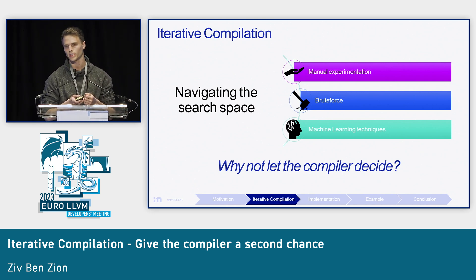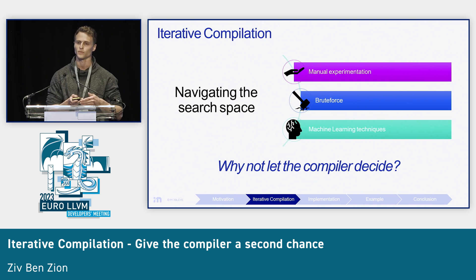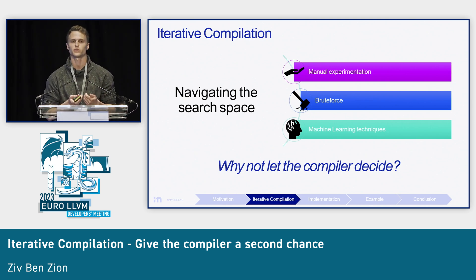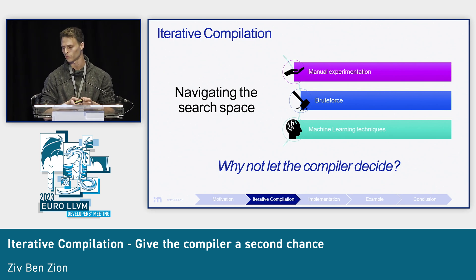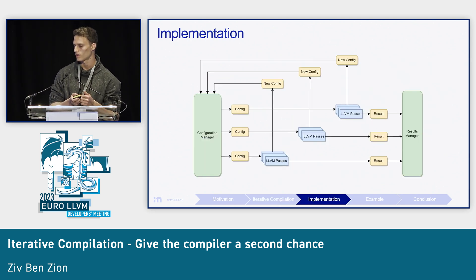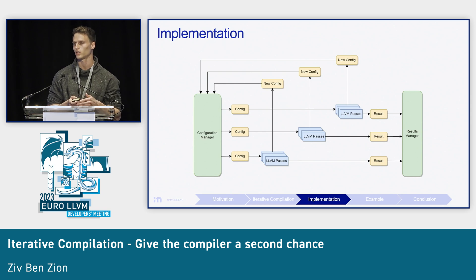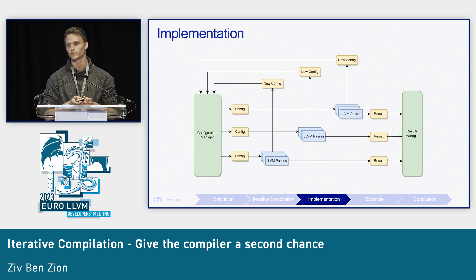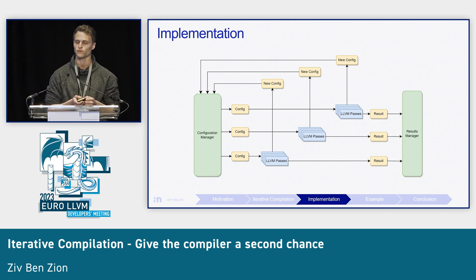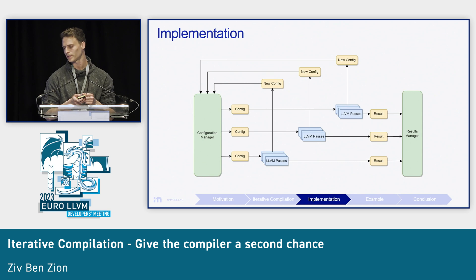Let's recall the vectorizer example. We had two factors, VF and UF, and the vectorizer has a cost model to assign a cost for each set of factors. It can use this information to decide which are the most interesting sets of factors to retry in an iterative compilation process. And that's exactly what we've implemented. Here is a quick high-level overview of our feature. We have a configuration manager, which is in charge of invoking new compiler instances and passing them different configurations, such that an LLVM pass can read a specific decision from the current configuration at any given point in time. It can also register a new configuration back to the configuration manager.